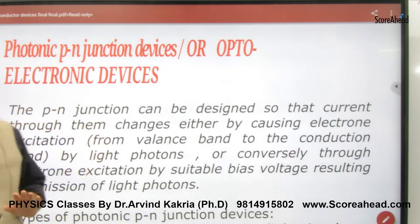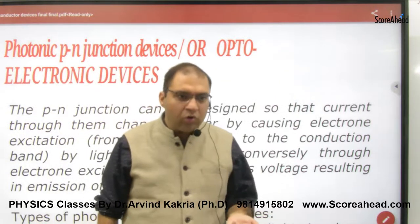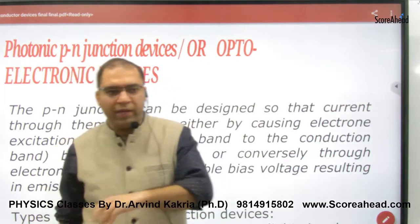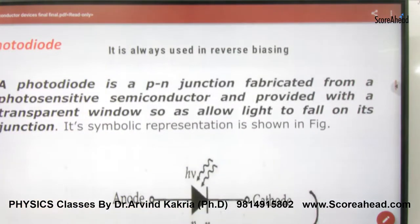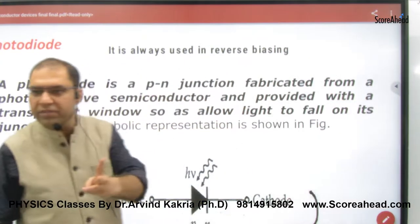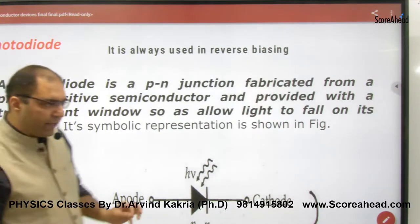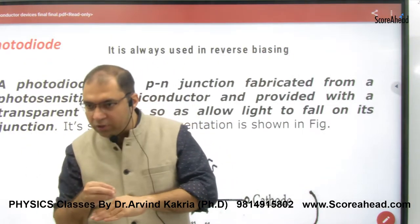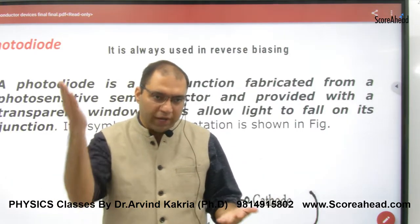Photonic PN Junction Devices, or Optoelectronic Devices — 'opto' and 'photo' relate to light. These are diodes which convert light to electricity or convert electricity to light. Among the types of diodes, after the simple diode and zener diode, the next type is the photodiode. The photodiode has a photon or light incident on it and converts light to electricity.